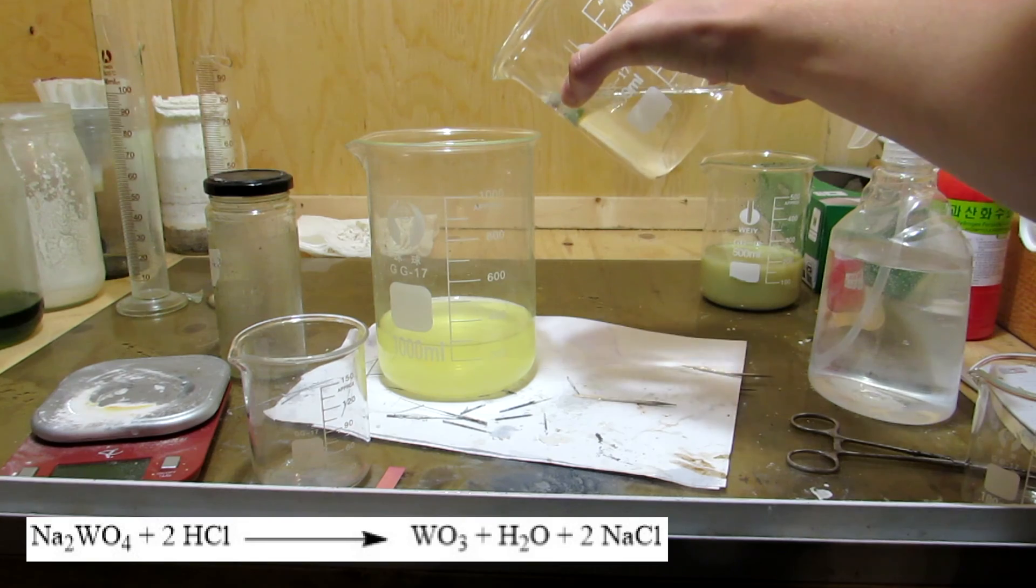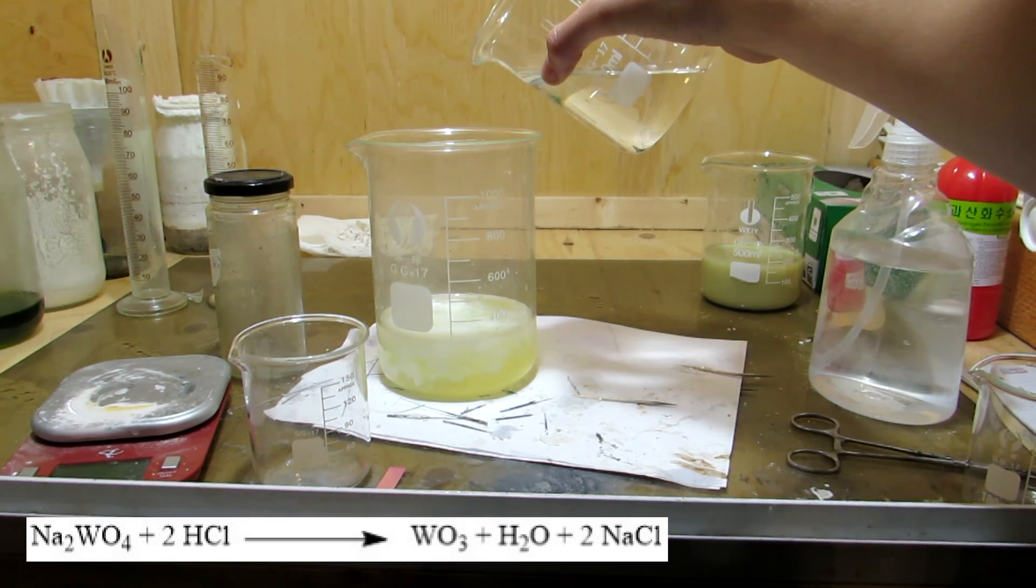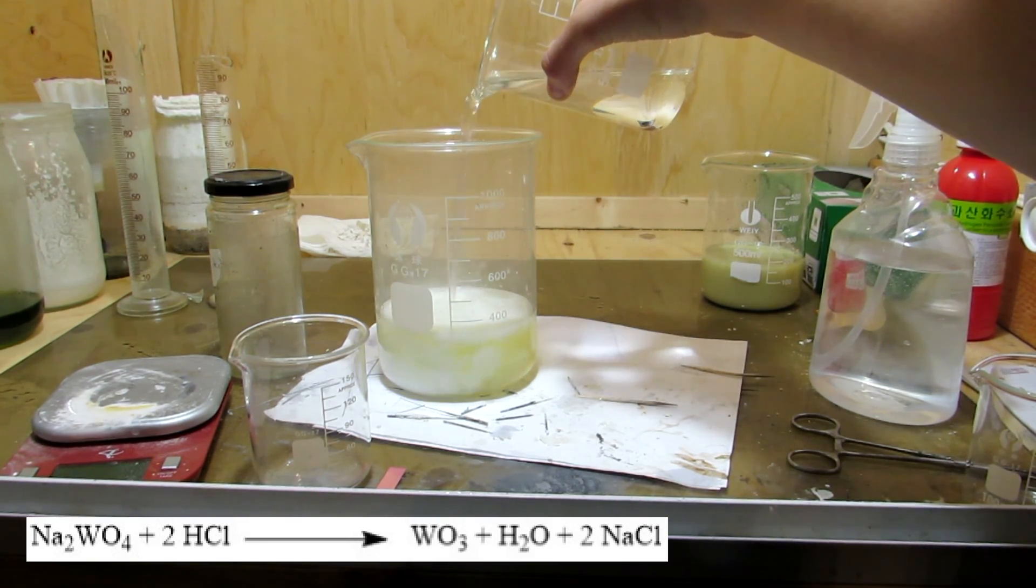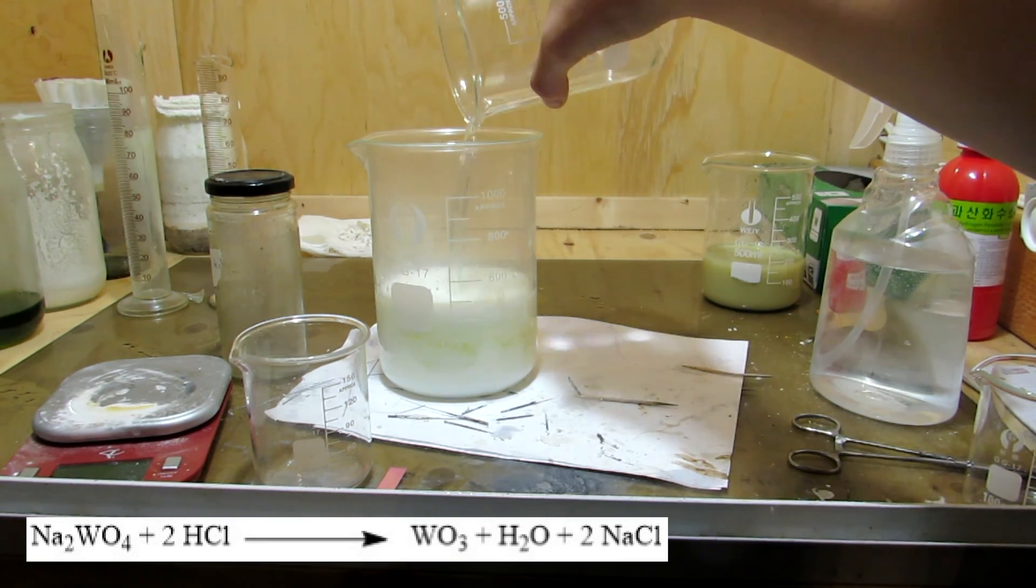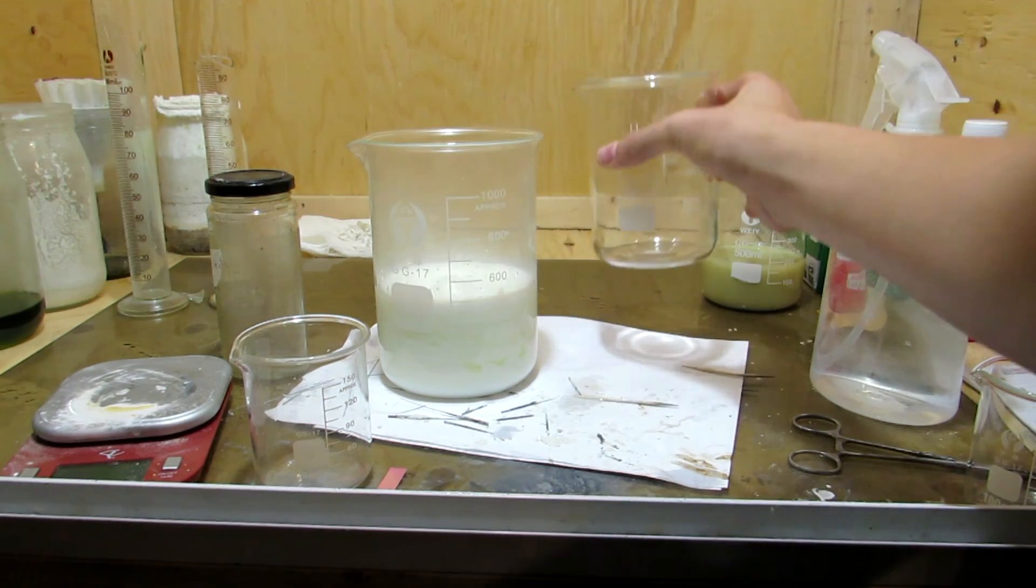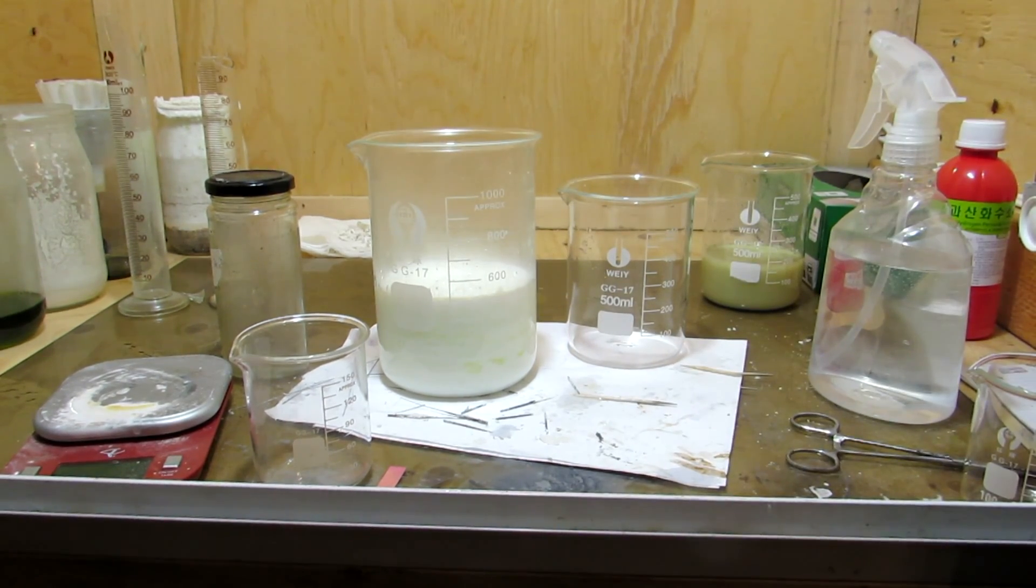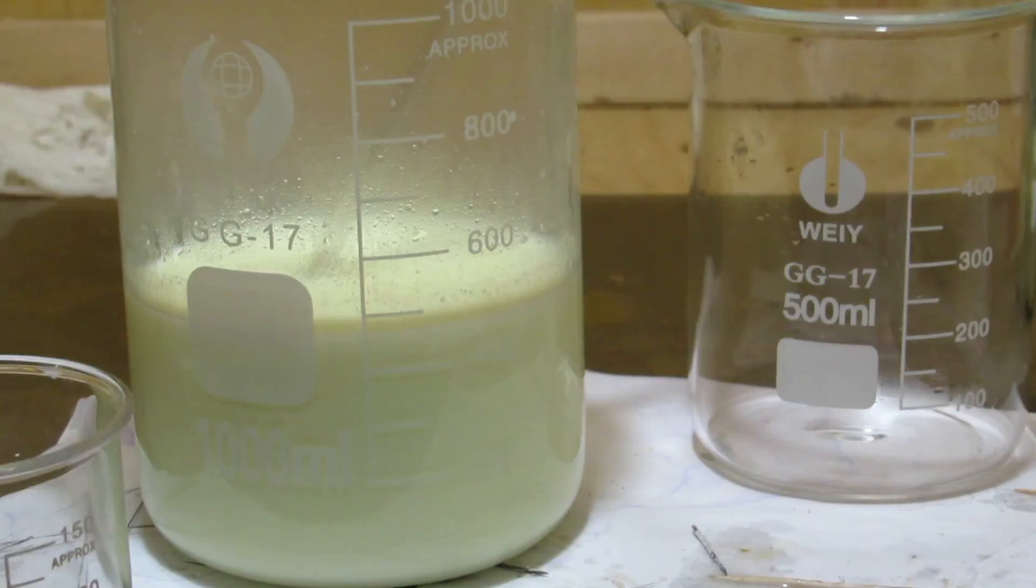Next, we can add about 200 milliliters of concentrated hydrochloric acid to convert the sodium tungstate to tungstic acid, which precipitates out. Concentrated hydrochloric acid can be purchased from hardware stores as muriatic acid. Interestingly, the precipitate was initially white, even though the tungstic acid is yellow.